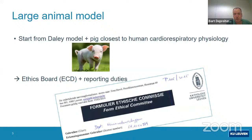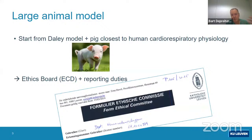This is a large animal model and it comes with challenges. We started from an existing piglet model. The pig is closest to human cardiorespiratory physiology — you could use subhuman primates but that's overshooting. The pig is very well suited to answer physiological questions. A large animal model comes with challenges: you need ethics board approval, and the requirements for providing sufficient comfort and avoiding suffering are higher in larger animals than in smaller ones. There are also reporting duties associated.